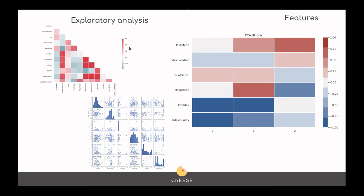To prepare the machine learning algorithms, we performed an exhaustive exploratory analysis of all the features provided by the databases and catalogues, to finally decide that the most representative features are the magnitude, the PGA value mean, index location, the focal depth, the infrastructure index, and the infrastructure index quality.